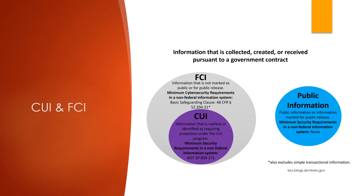Many of you may already be aware of what CUI and FCI are, but for those who are not, CUI is information that the government creates or possesses, or information someone has created on behalf of the government, and this type of information requires additional safeguarding while handling it. FCI is information that is provided by or generated for the government under contract, but it is not intended for public release. The CMMC is intended to serve as a certificate to verify that appropriate levels of cybersecurity practices and processes are in place to protect the CUI and FCI information.